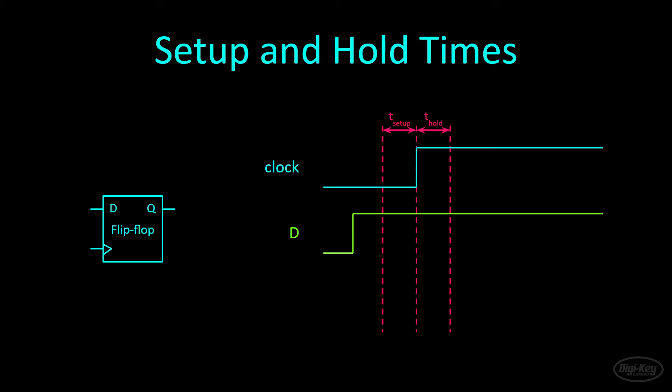So long as the input does not change within the setup and hold windows, the output Q will update to reflect the registered value and is guaranteed to be steady. However, if D changes within the setup or hold windows, that is a timing violation. This could potentially cause the D flip flop to not latch the input signal properly and enter into a metastable state.